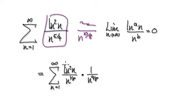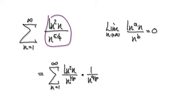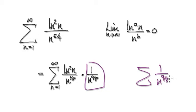Break this up as one block multiplying another block. Here you've got 10, which is the same as 9 plus 1. So break this up as this. At the back of your mind, this is a p-series where p is greater than 1.